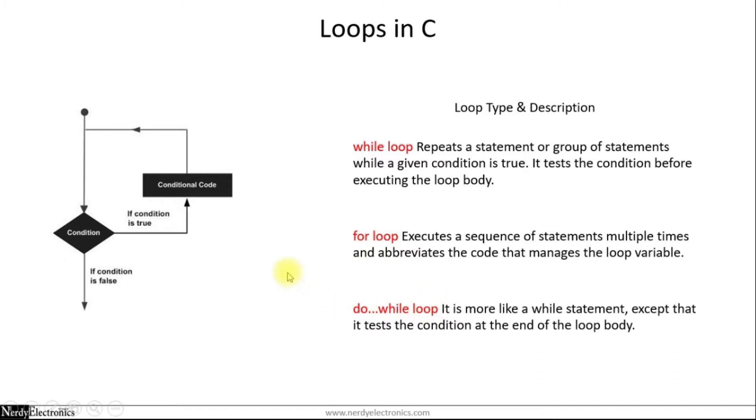The basic flowchart of a loop is that we will check for a condition. If the condition is true, we execute the conditional code. After executing the conditional code, we again check for the condition. If the condition is true, we again execute the code, or if it is false, we exit the loop.